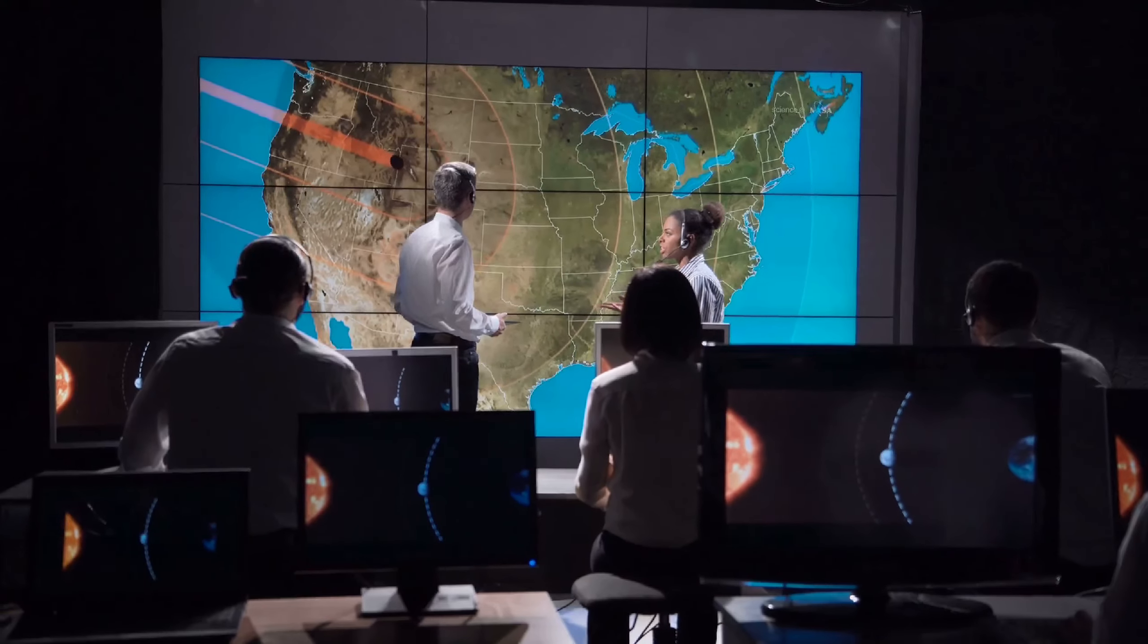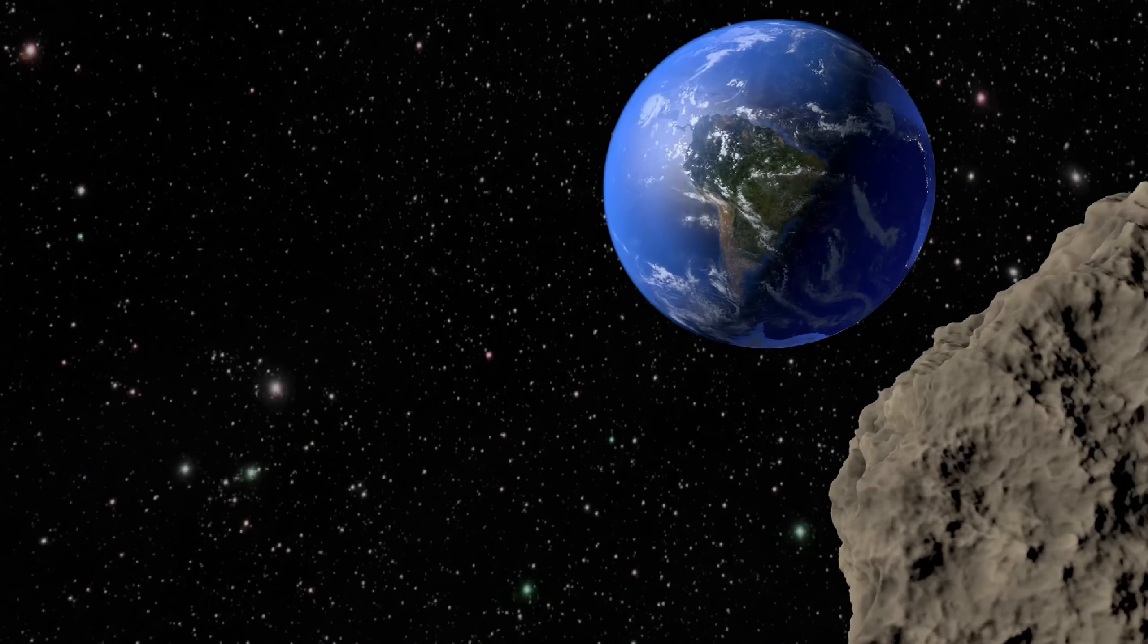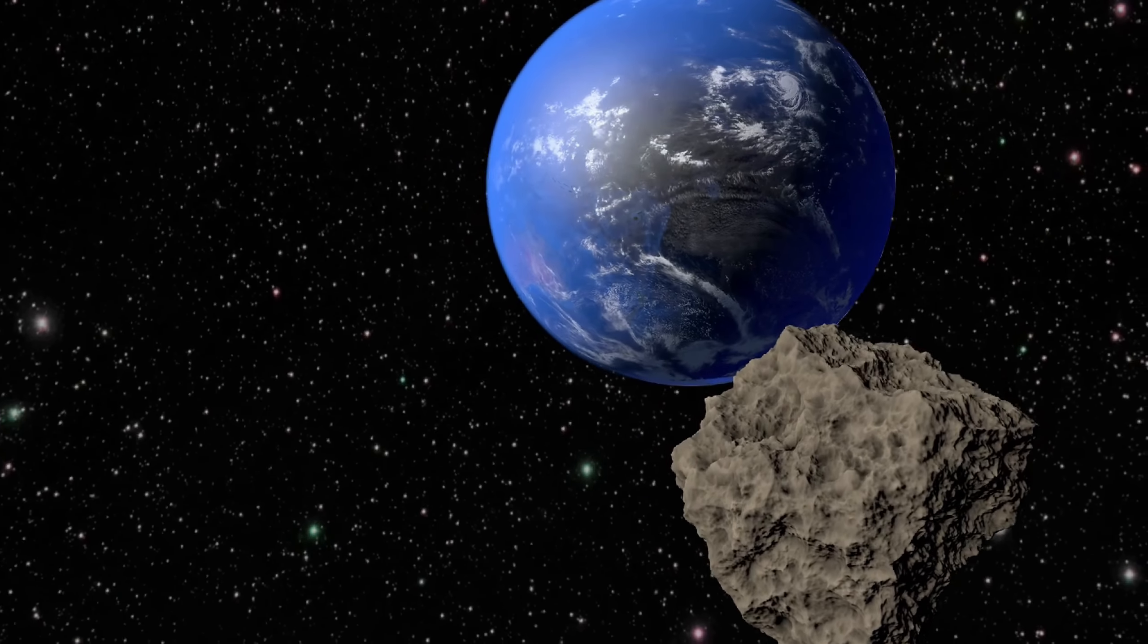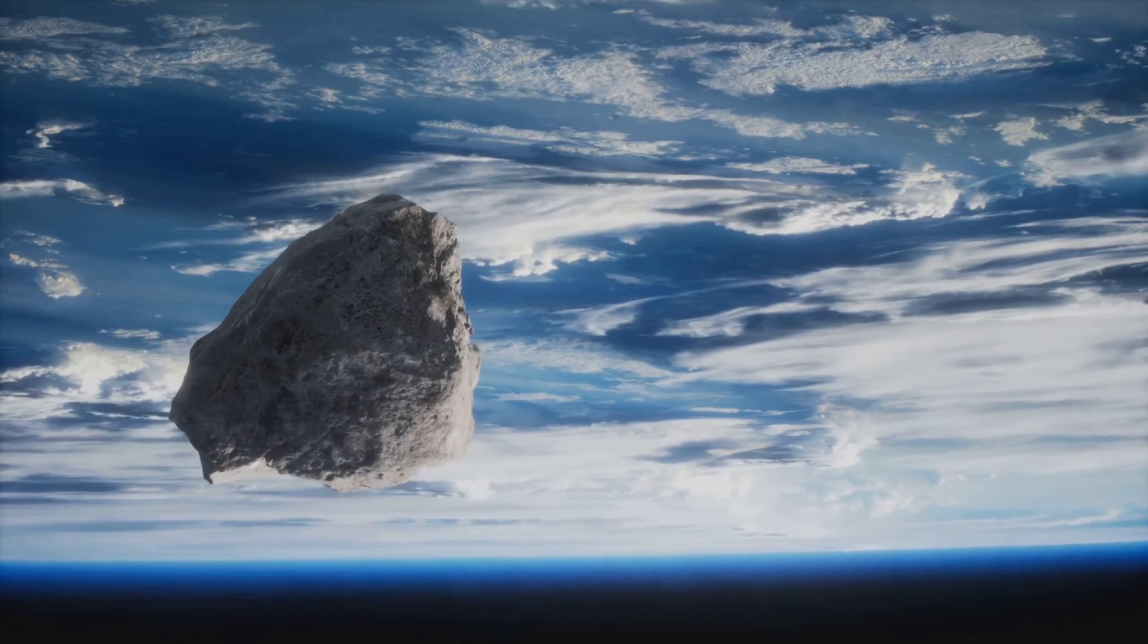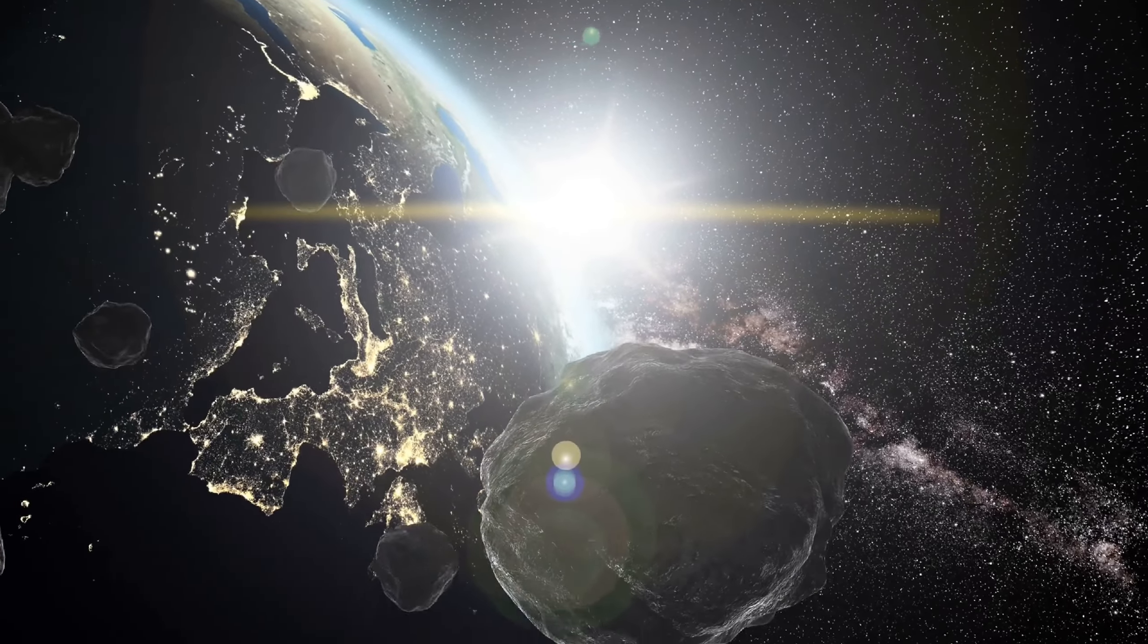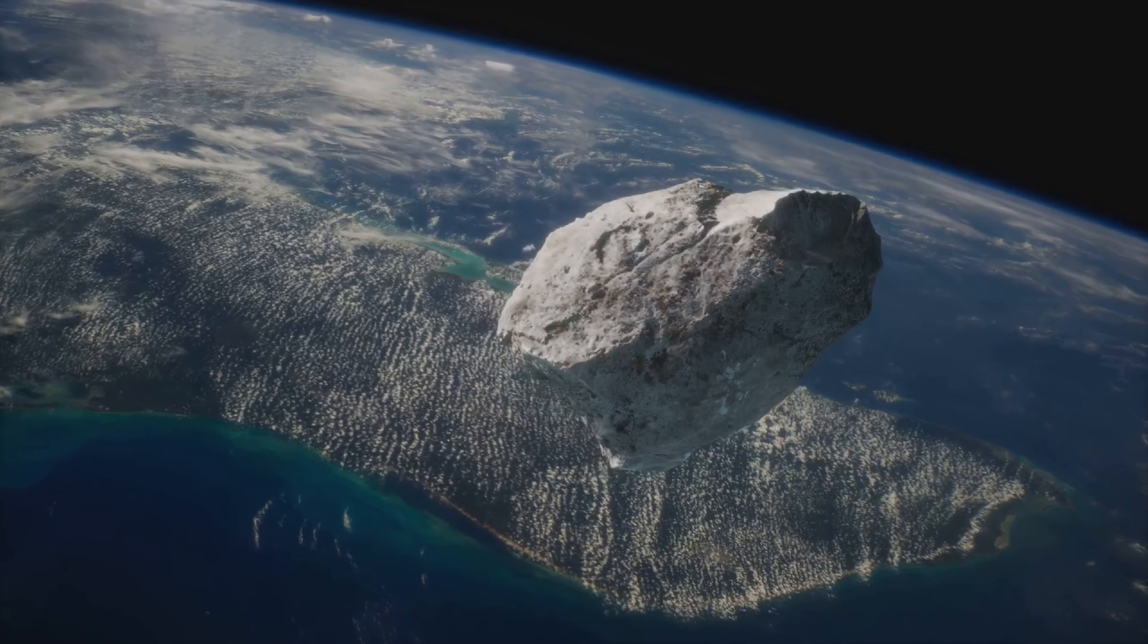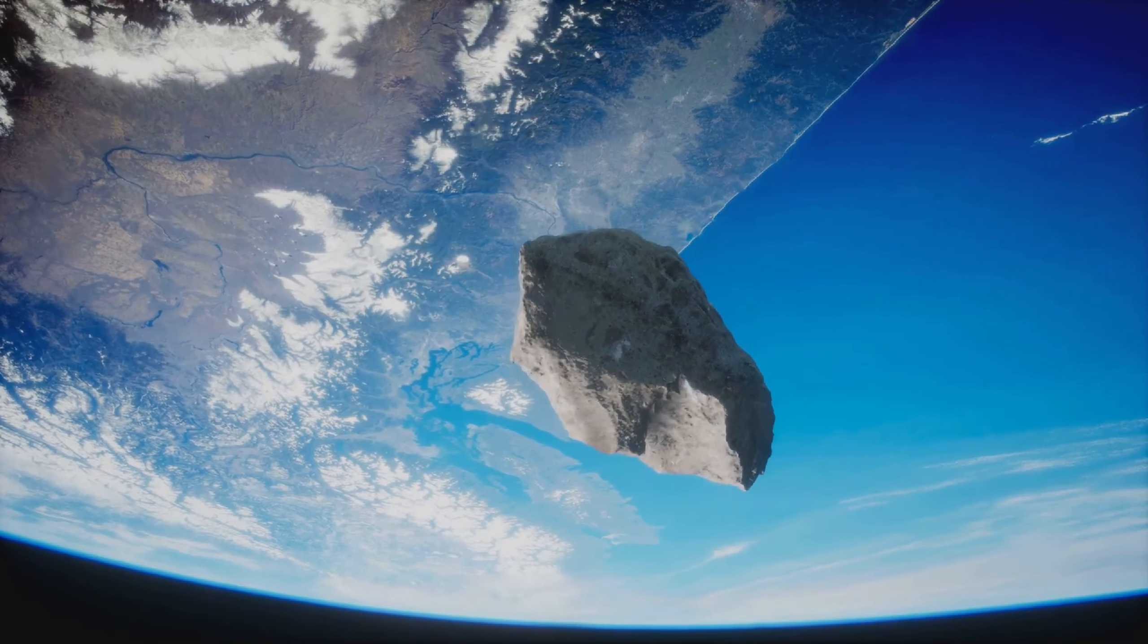As the data rolled in, the initial shock gave way to a more measured response. By 2006, thanks to improved orbital predictions and ongoing observations, scientists were able to rule out the possibility of a collision in 2029. However, the asteroid would still make an exceptionally close approach, closer than many of our geostationary satellites at a distance of just 31,000 kilometers from Earth. Such proximity, while not catastrophic, was unprecedented for an object of its size.